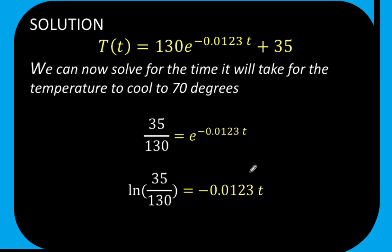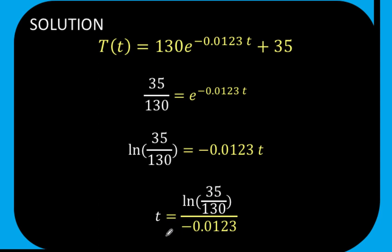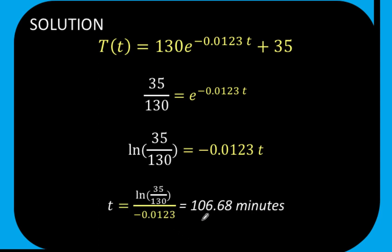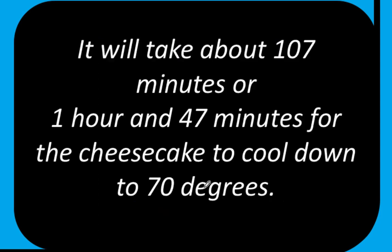Applying the power rule of logarithms and then finally solving for t and applying symmetric property of equality, we now arrive at t equals 106.68 minutes, which we can round off to 107 minutes.